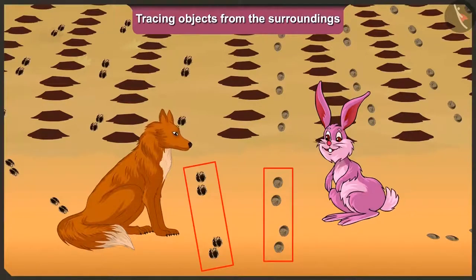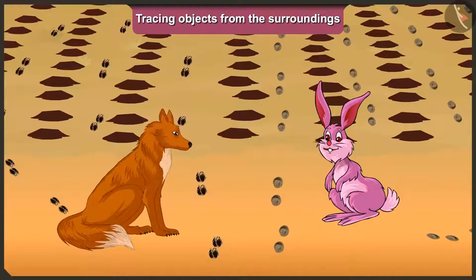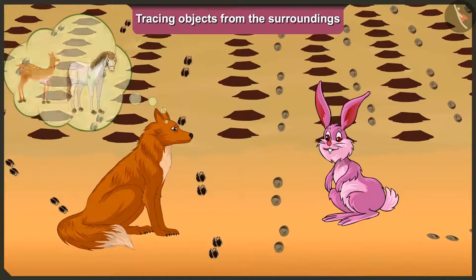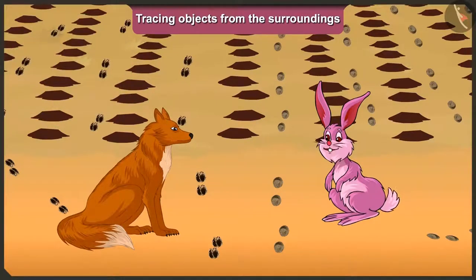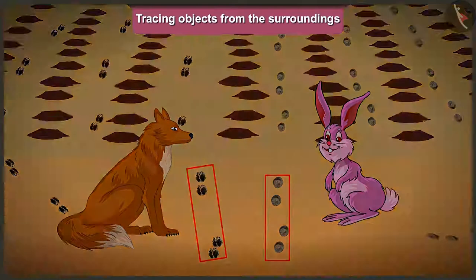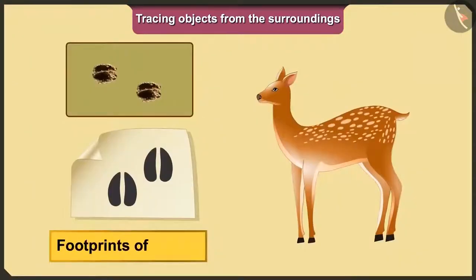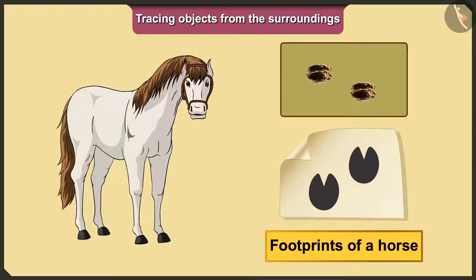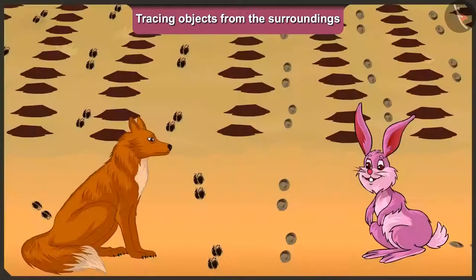Looking at those two traces of feet, the fox immediately told the rabbit, "Look, the deer and the horse came in your farm." "Hey, but how did you know that?" "Just look carefully. These traces match the traces of deer's feet, and these traces match the traces of horse's feet."